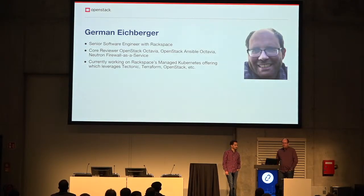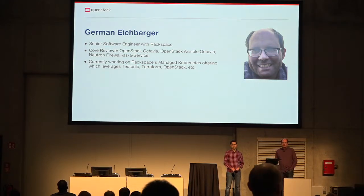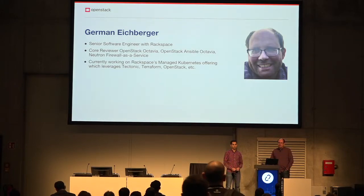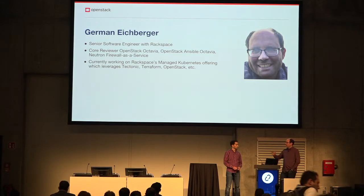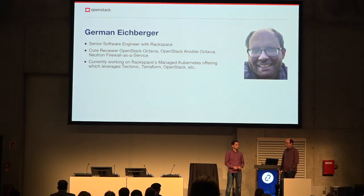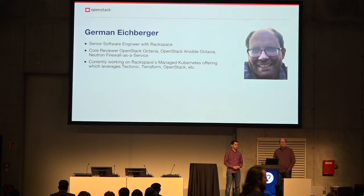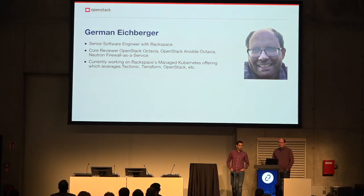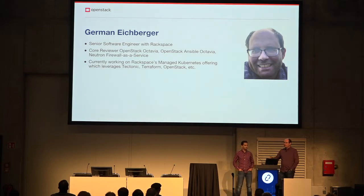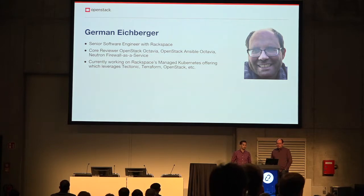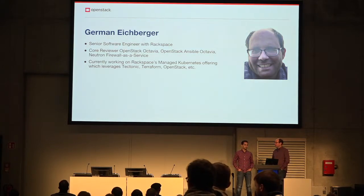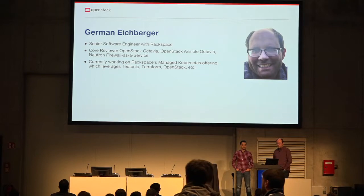My name is German Eichberger. I'm a senior software engineer with Rackspace, and I'm a core reviewer on Octavia, OpenStack Ansible Octavia, and Firewall as a Service. Currently I'm with the Rackspace Managed Kubernetes team, helping them with load balancing and architecting how to put Kubernetes on top of OpenStack or AWS or whatever platform they need.